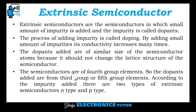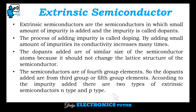The semiconductors are fourth group elements, so the dopants added are from third group or fifth group elements. According to the impurity added, there are two types of extrinsic semiconductors: N-type and P-type.